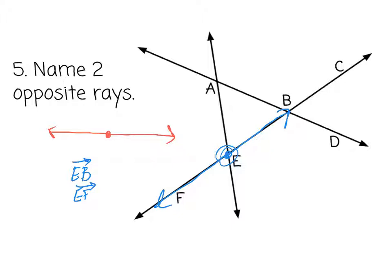I want to point out too, I could have also named this EB right here, I could also name that EC. Again, because the endpoint is listed first, the second one is just the direction it's going. So both B and C are going in the same direction because they're on the same line. So I could have also named that EC.